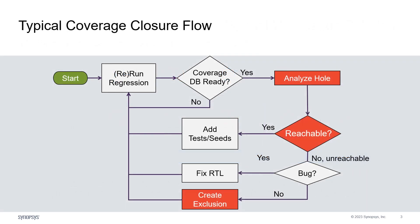A typical coverage closure flow starts from running simulation regressions to generate the coverage database. Verification engineers will analyze the coverage report to see if there are goals that have not been covered by existing tests. These goals could be for line, branch, toggle, condition, or finite state machine coverage. These uncovered goals are often referred to as coverage holes.